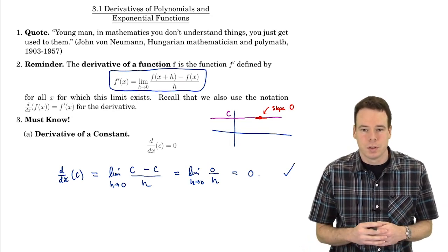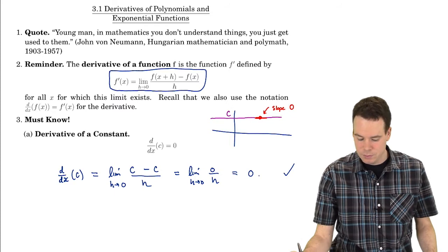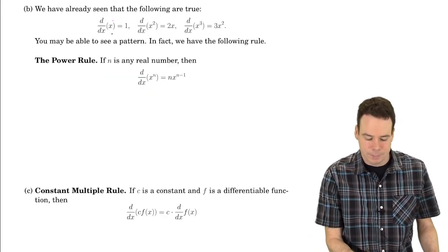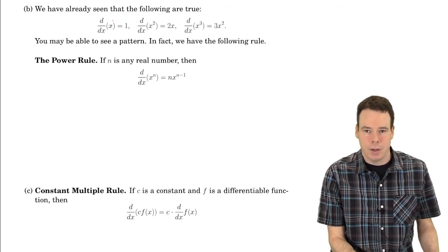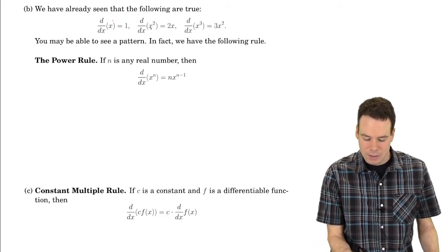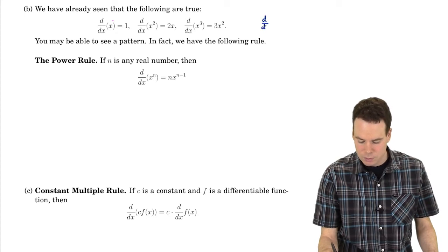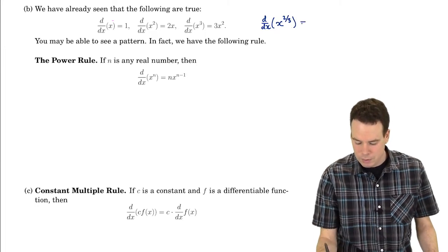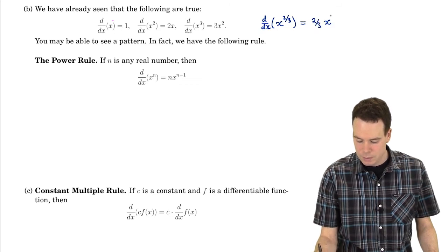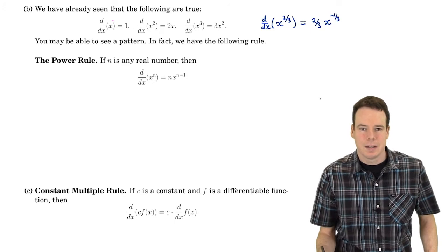Now let's look at the next class of functions: power functions. What are power functions? They're x raised to any power. For example, x to the power of 1, or just x — we've already seen that its derivative is 1. What about x squared? We've seen that the derivative of x squared is 2x. And x cubed — the derivative is 3x squared. We've also seen x to the 2/3 in a previous lecture, and we found that its derivative is 2/3 times x to the negative 1/3. All of these were found using the definition of derivative. Can we see a pattern emerging?